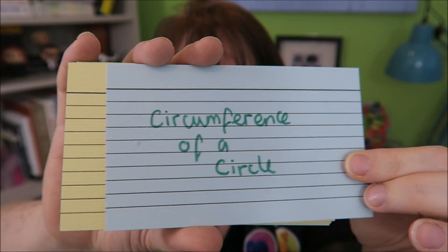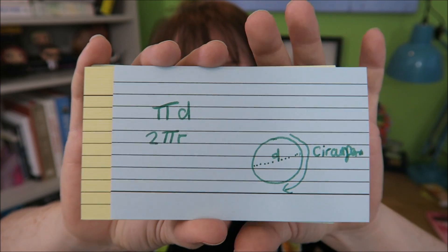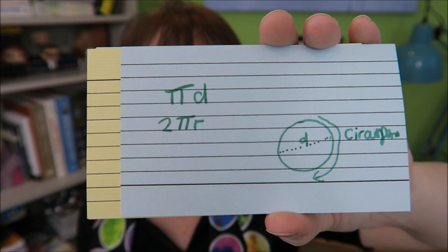Circumference of a circle. That is either pi D or two pi R.